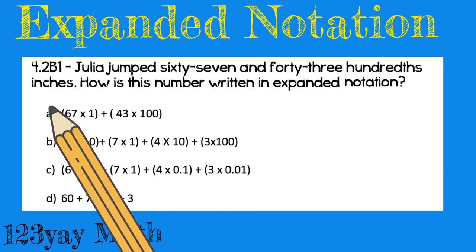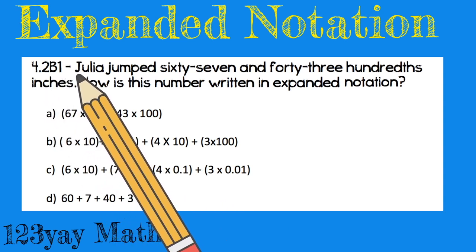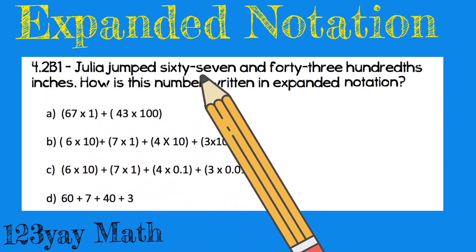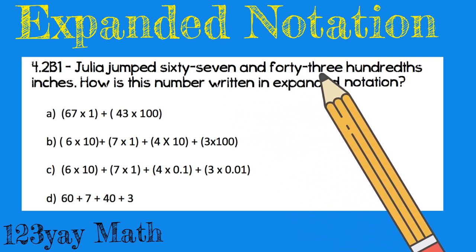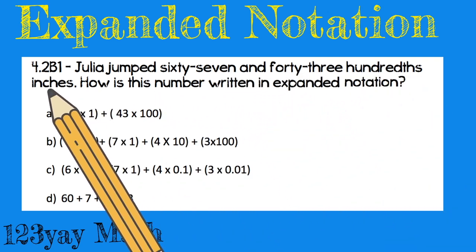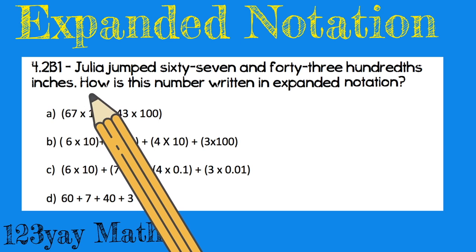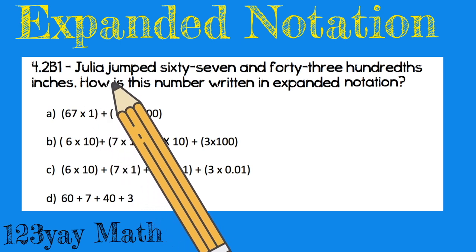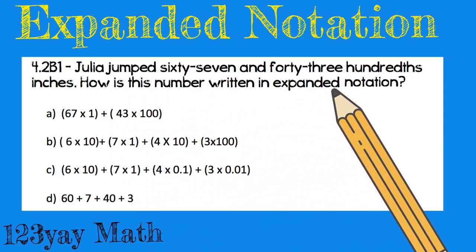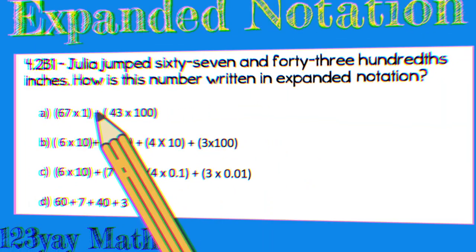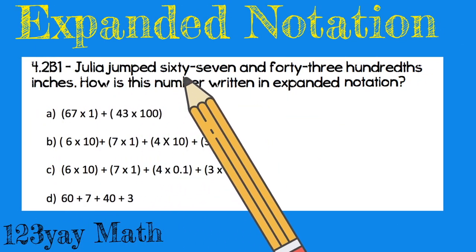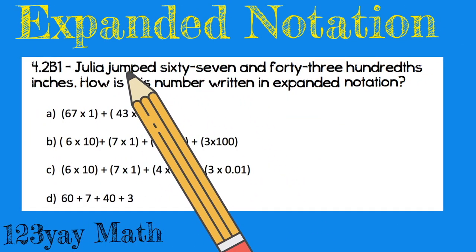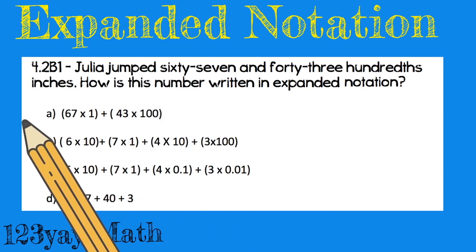Let's get this party started. It says Julia jumps 67 and 4300 inches. That sounds weird, but okay, how is this number written in expanded notation? We have A, B, C, and D, but I always try to solve this on my own, so let's look for the keywords.